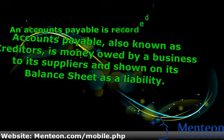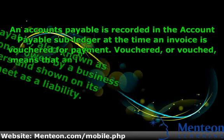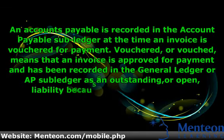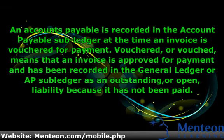An Accounts Payable is recorded in the Account Payable subledger at the time an invoice is vouchered for payment. Vouchered, or vouched, means that an invoice is approved for payment and has been recorded in the General Ledger as an outstanding liability because it has not been paid.